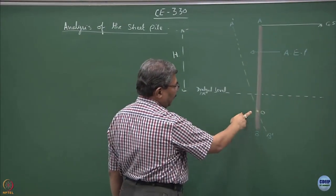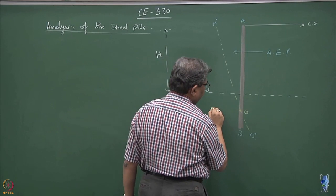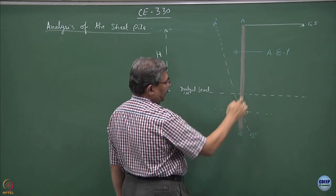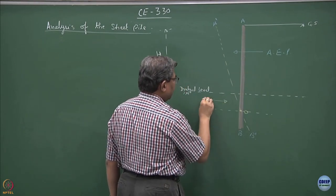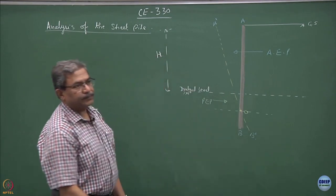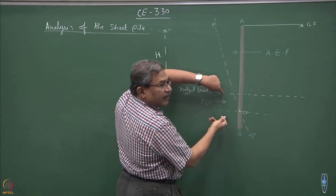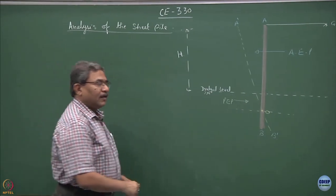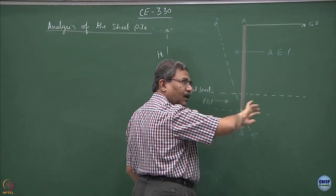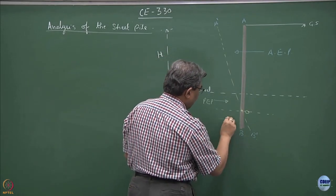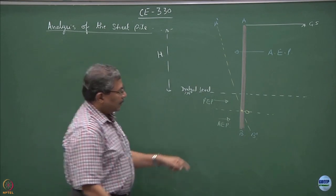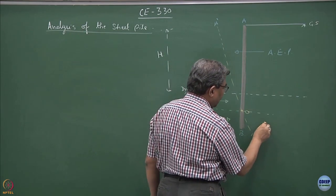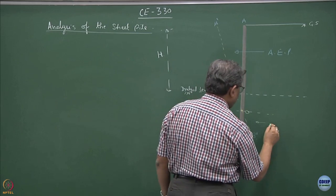Below the dredge line up to point O, this much of the soil mass is resisting the movement of the pile, so this happens to be passive earth pressure above this line. What about the region below this? This portion is pushing the wall outside, so this is active earth pressure, and the sheet pile trying to move into the backfill mobilizes passive earth pressure.